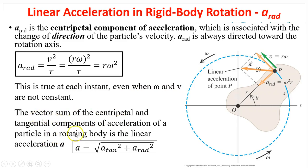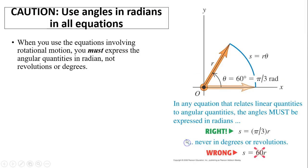The vector sum of centripetal and tangential components tells us the magnitude of acceleration, linear acceleration, using Pythagorean theorem. We can also use inverse tangent to tell us the direction of A. Question: we must use angles in radians in all equations. Otherwise, it will not work.